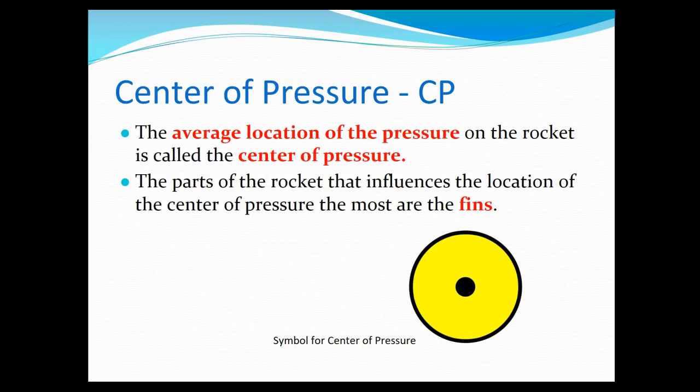So the center of pressure is if you could have one point on the rocket where all of the aerodynamic forces are concentrated, that's essentially the center of pressure. And one of the biggest components or the biggest influencers of the center of pressure are the fins. So the shape of the fins and where the fins are located, the size of the fins, all have a big effect on the center of pressure. And you see that symbol kind of looks like a target. It's just a circle with a dot in it.